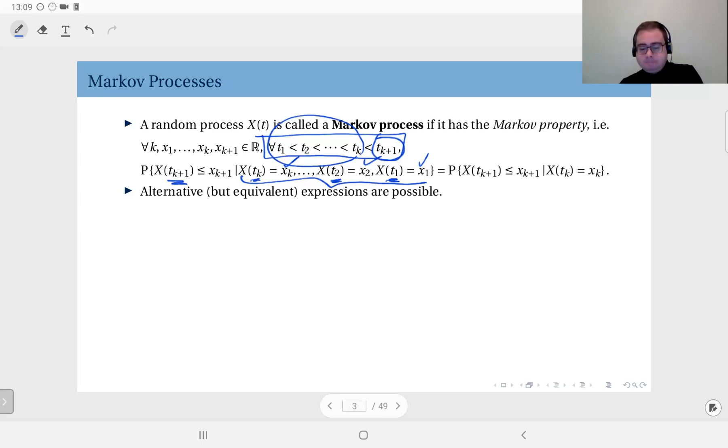So here I would like to write this probability based on my previous information given all my observations. The Markov property is the property that for all possible choices of such observation points t values, and for all number of observations in this sense, and for all values the random process can take, this conditional probability...